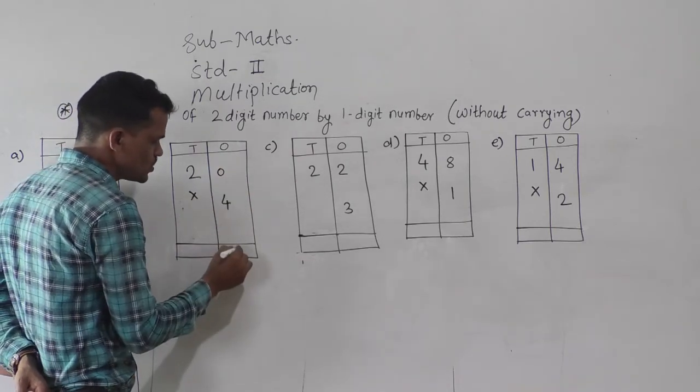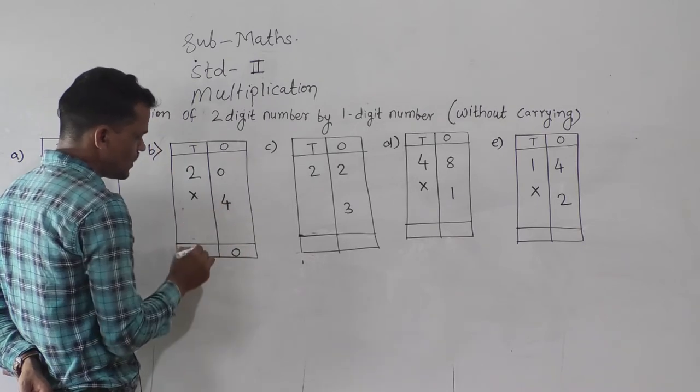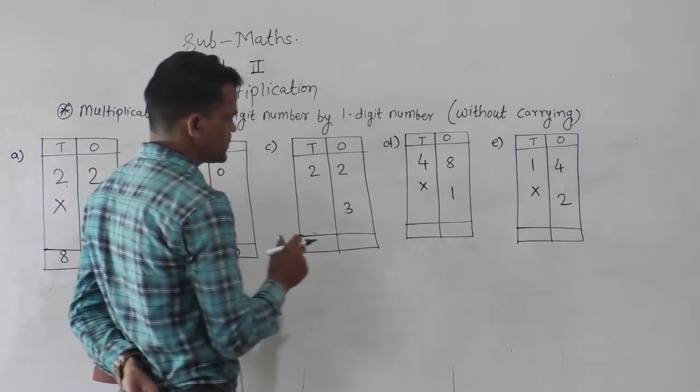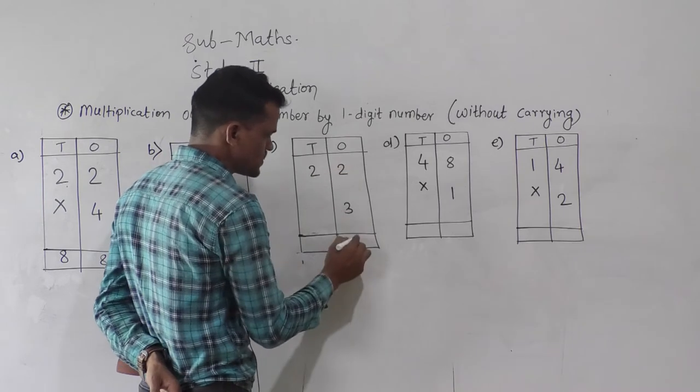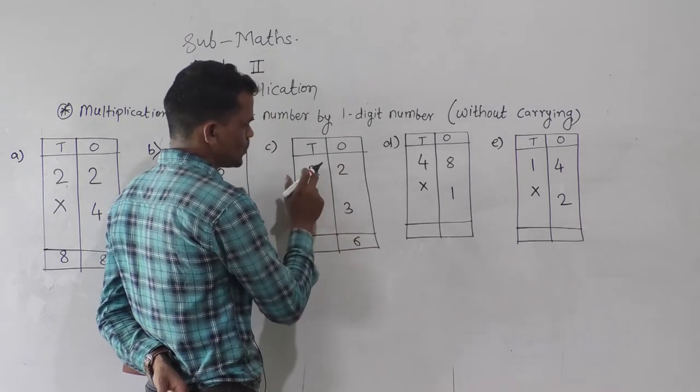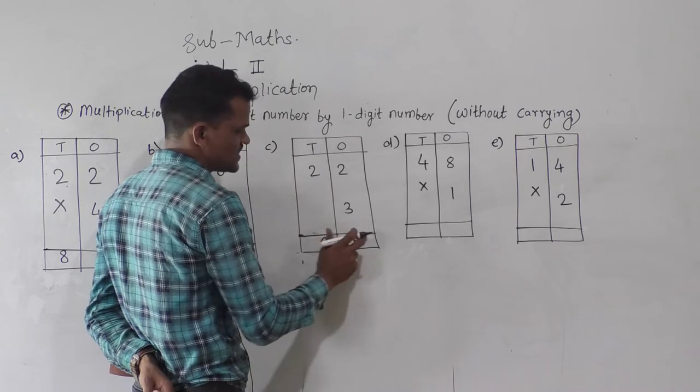Then next is 3 twos are 6. 66 is the product of 22 and 3.